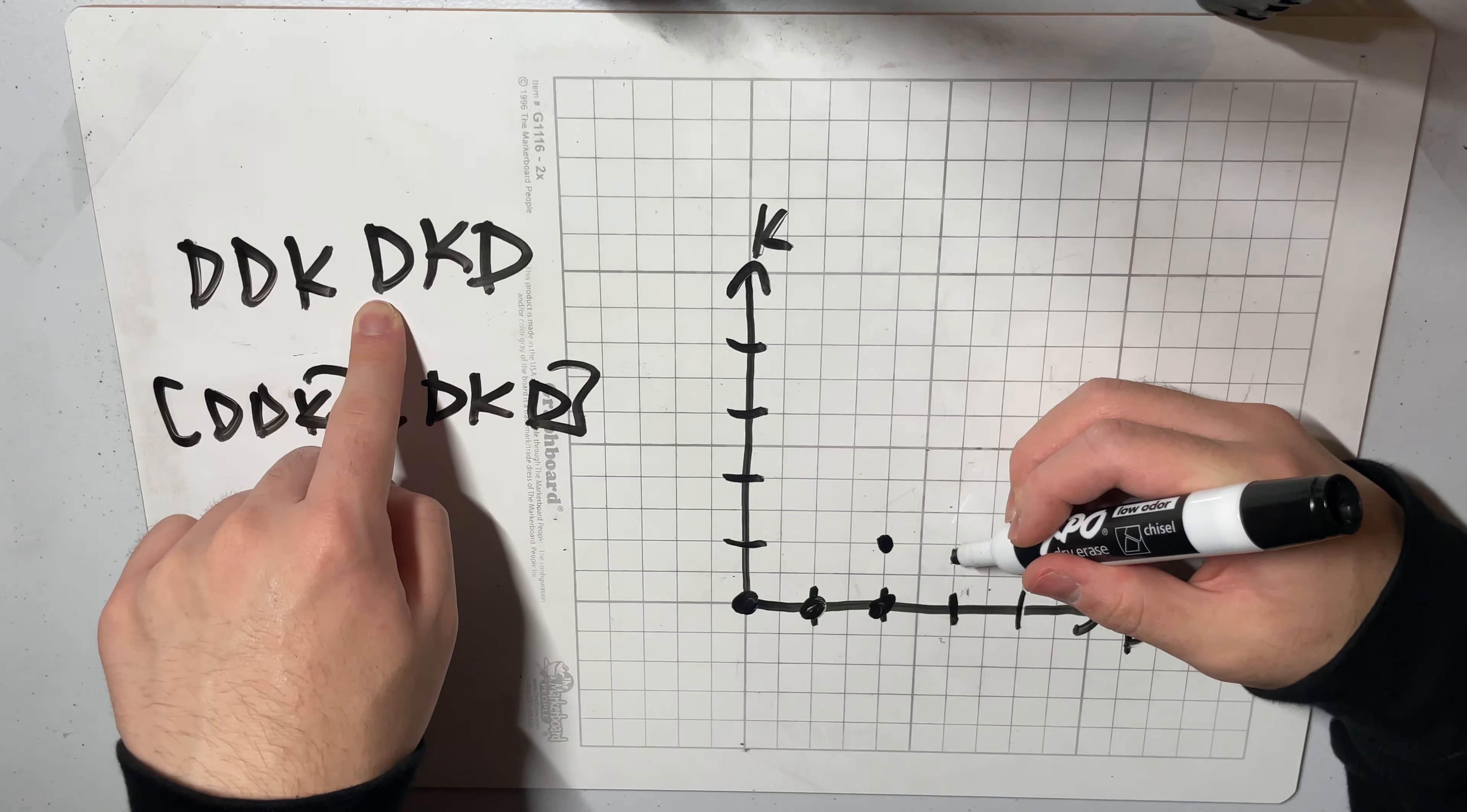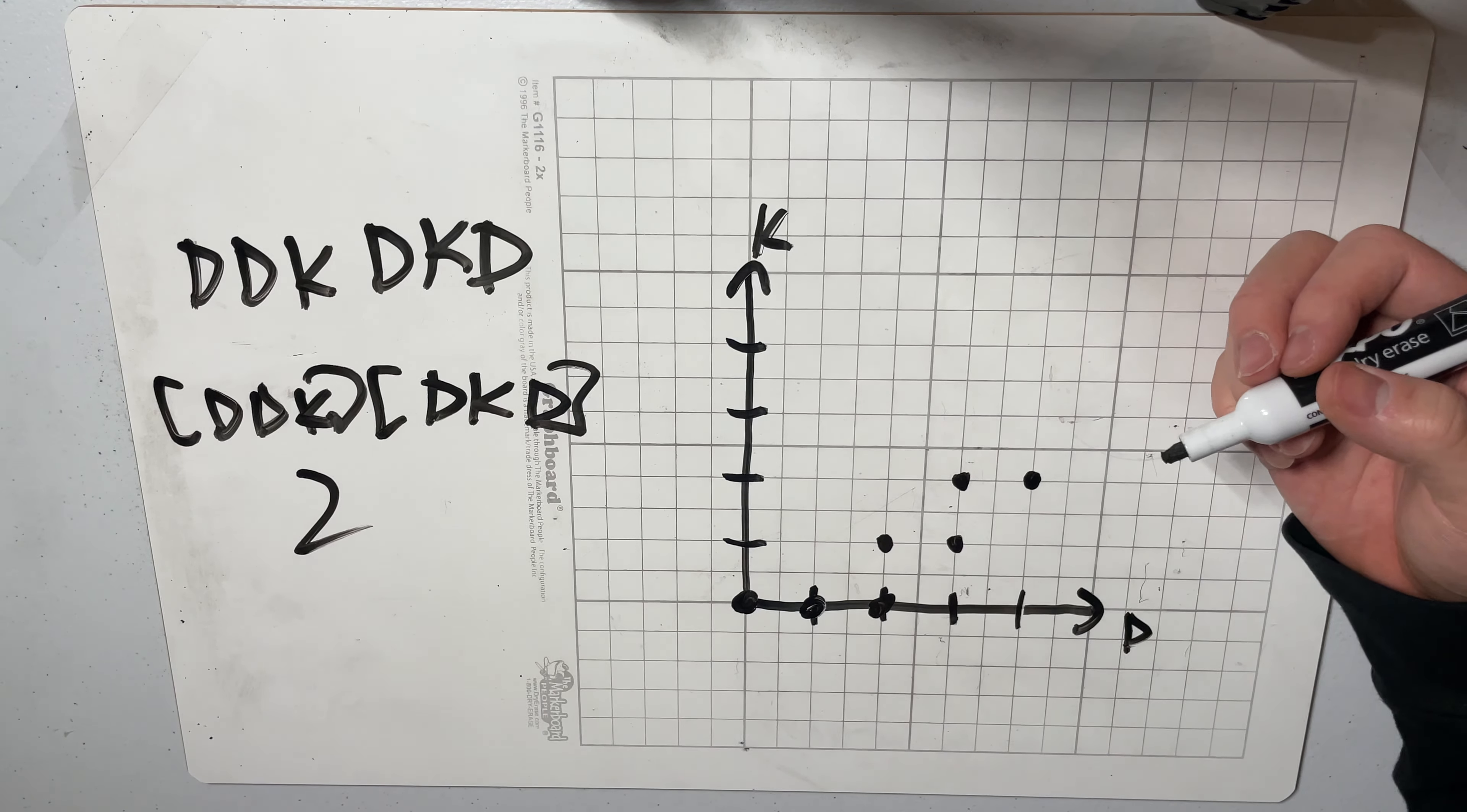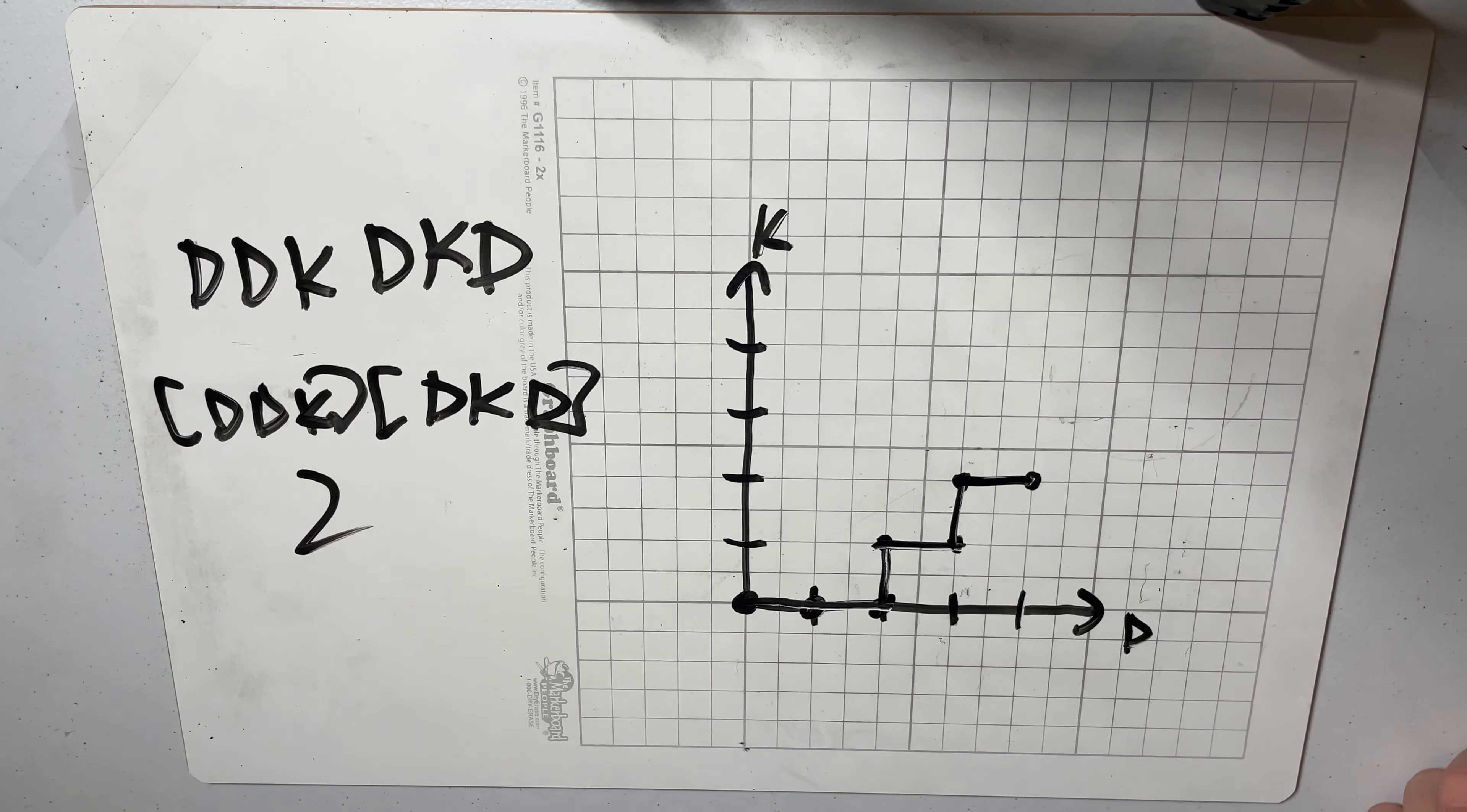And then we go d, we go one to the right, here's a k we go one up and then there's a d where we go one to the right. And so if we connect all these points together our line will look something like this. So why is it helpful to think of this problem as this graphical representation?